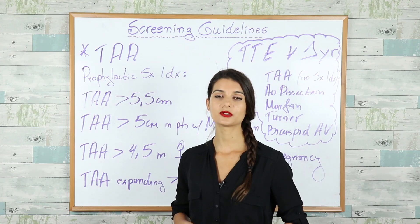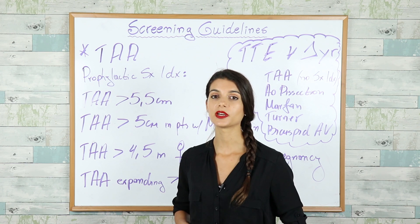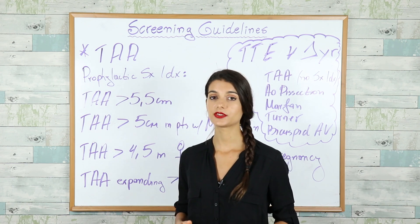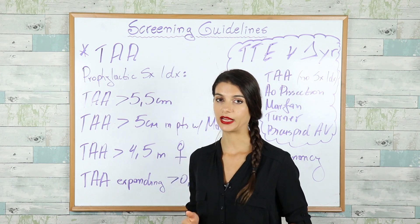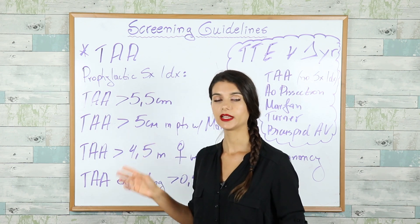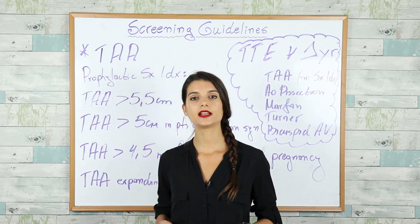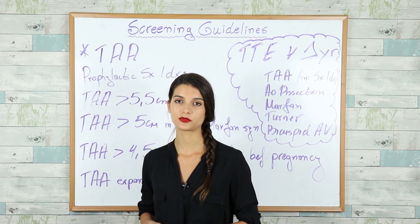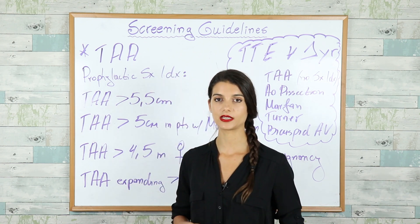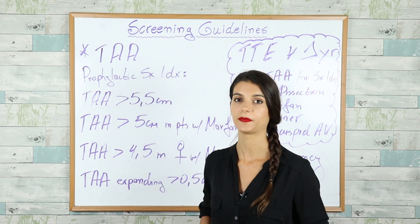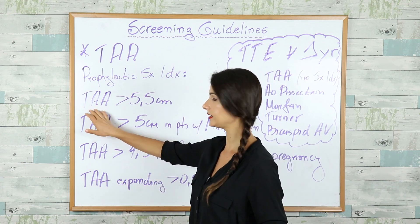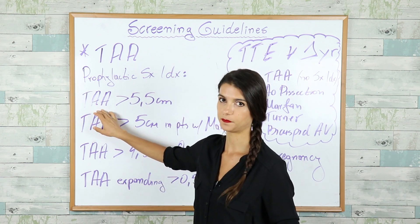For Thoracic Aortic Aneurysm, you have to know two guidelines. First, who gets the prophylactic surgery? And after that, who do we screen and how often do we screen for Thoracic Aortic Aneurysm, which is abbreviated as TAA.